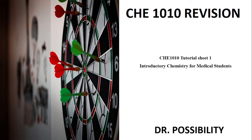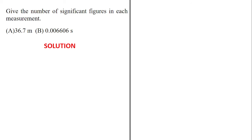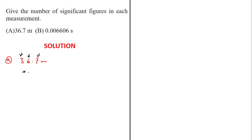The first question is: give the number of significant figures in each of the following. I've been given 36.7 meters. This is a very easy number — what you do is just count: one, two, three. So this one has just three significant figures.